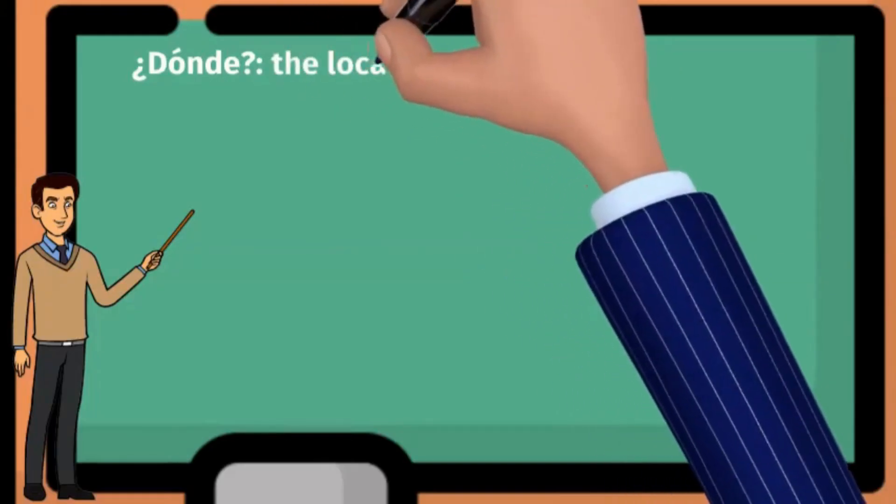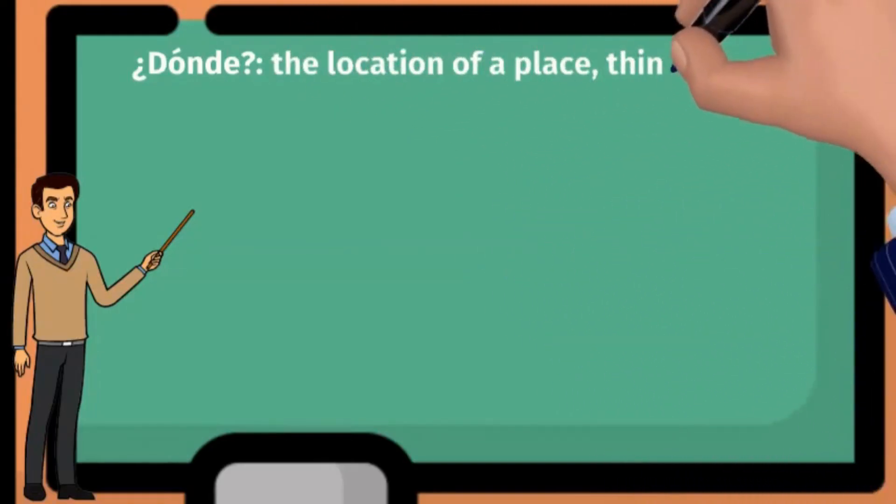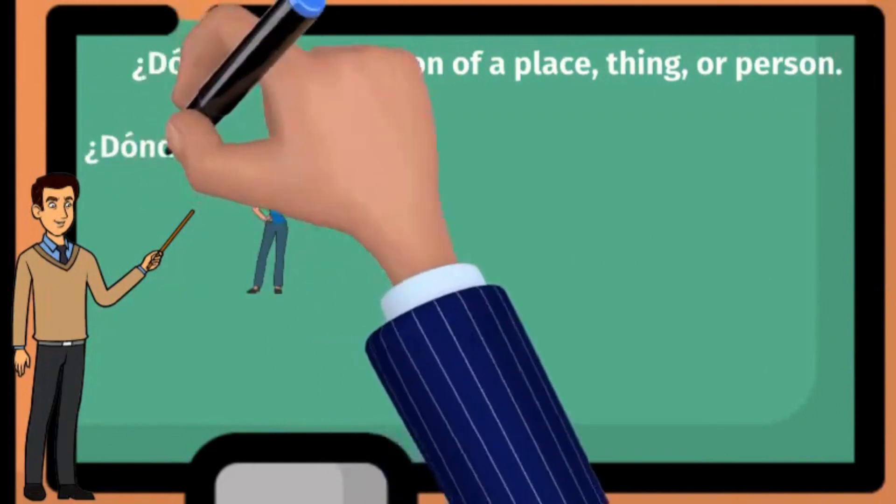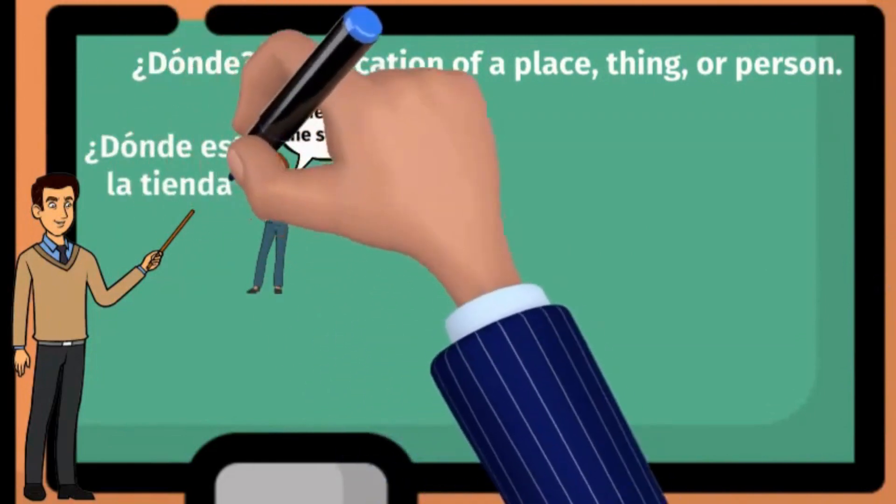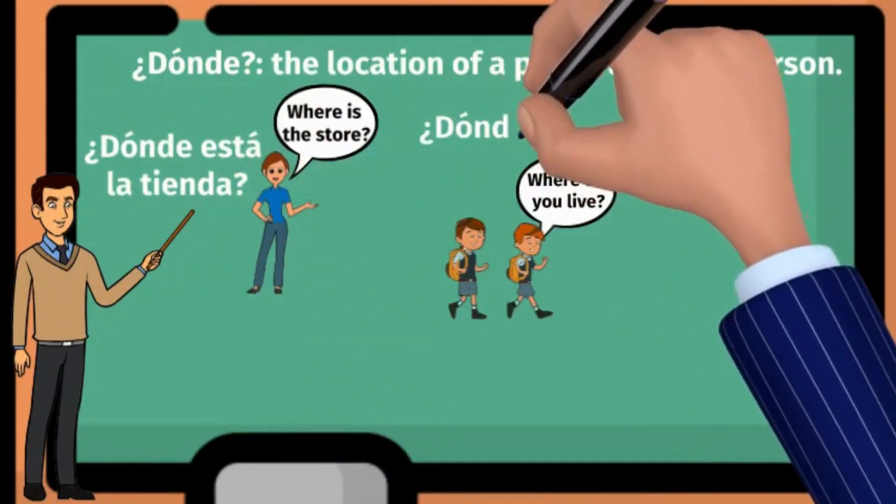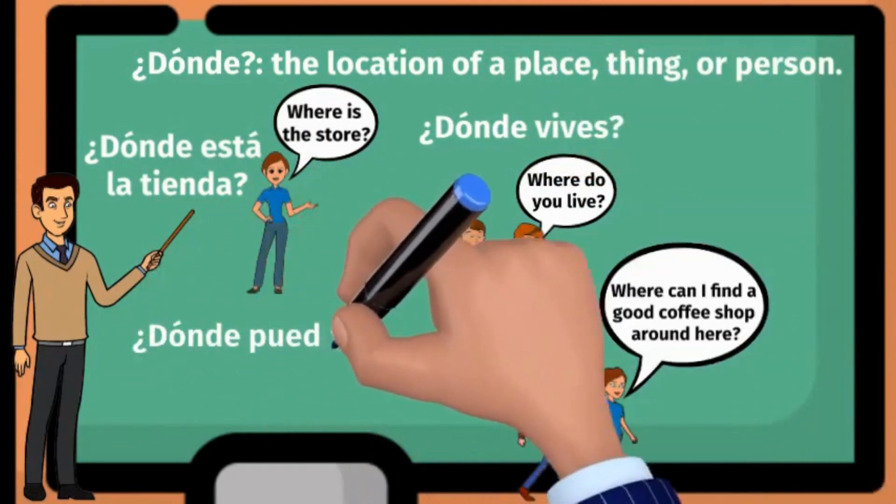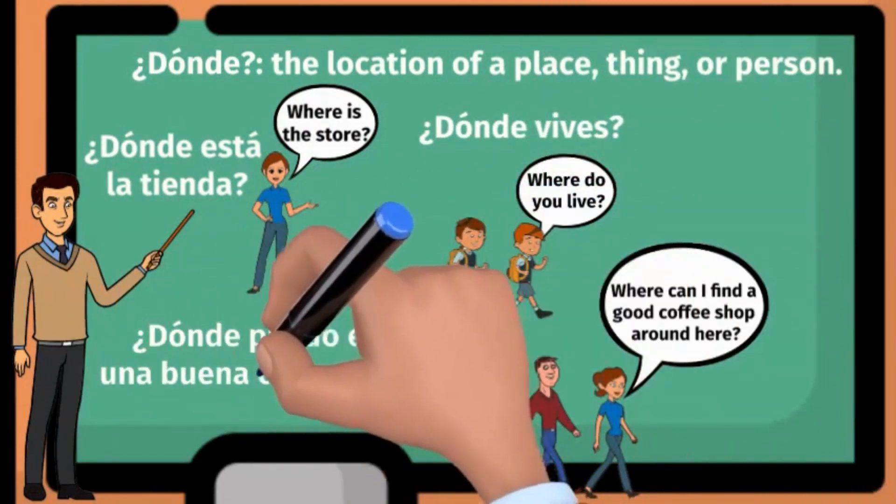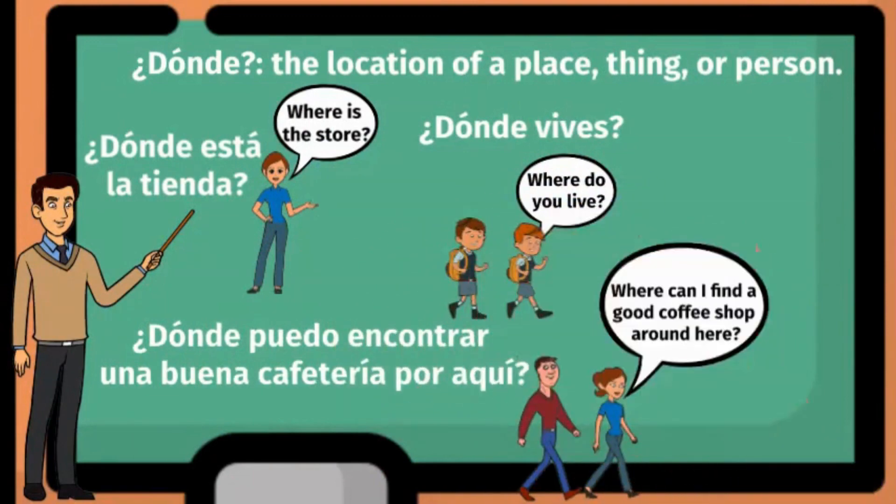Let's move on to ¿Dónde?. This question helps you ask for the location of a place, thing, or person. For example, if you want to know where a place, object, or person is, you can ask questions like ¿Dónde está la tienda?, ¿Dónde vives?, or ¿Dónde puedo encontrar una buena cafetería por aquí?